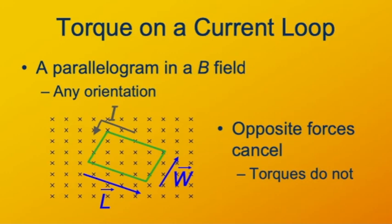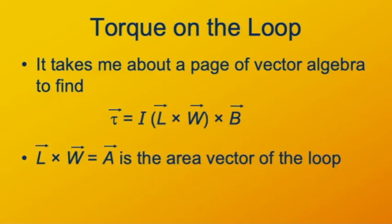It's a straightforward but tedious exercise to calculate what the torques are going to be. After about a page of vector algebra, we get this formula: the torque on a loop with sides defined by vectors L and W is I times L cross W, cross the magnetic field B. This is a triple cross product — L cross W cross B — and is itself a vector, which is appropriate since torque is a vector. Interestingly, the magnitude of L cross W gives you the area of the loop. We can characterize that vector L cross W as the area vector of the loop — a vector normal to the surface whose magnitude equals the area of that surface.